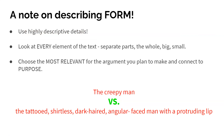Something to keep in mind when describing form: you need to use highly descriptive details. Adjectives are your friends here — use descriptive language. You want to look at every element of the text, break up all the unique parts and look at those individually and then put them together. Choose the most relevant elements for the argument you plan to make and connect to your purpose. You don't have to talk about every single element, but you must talk about the relevant ones.